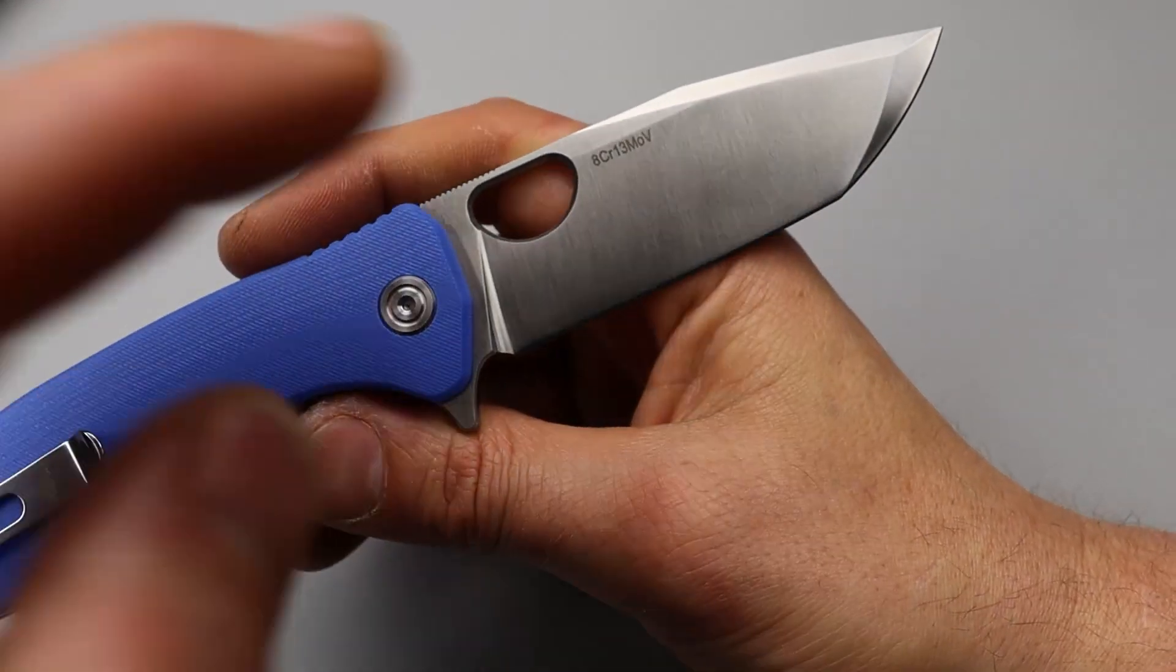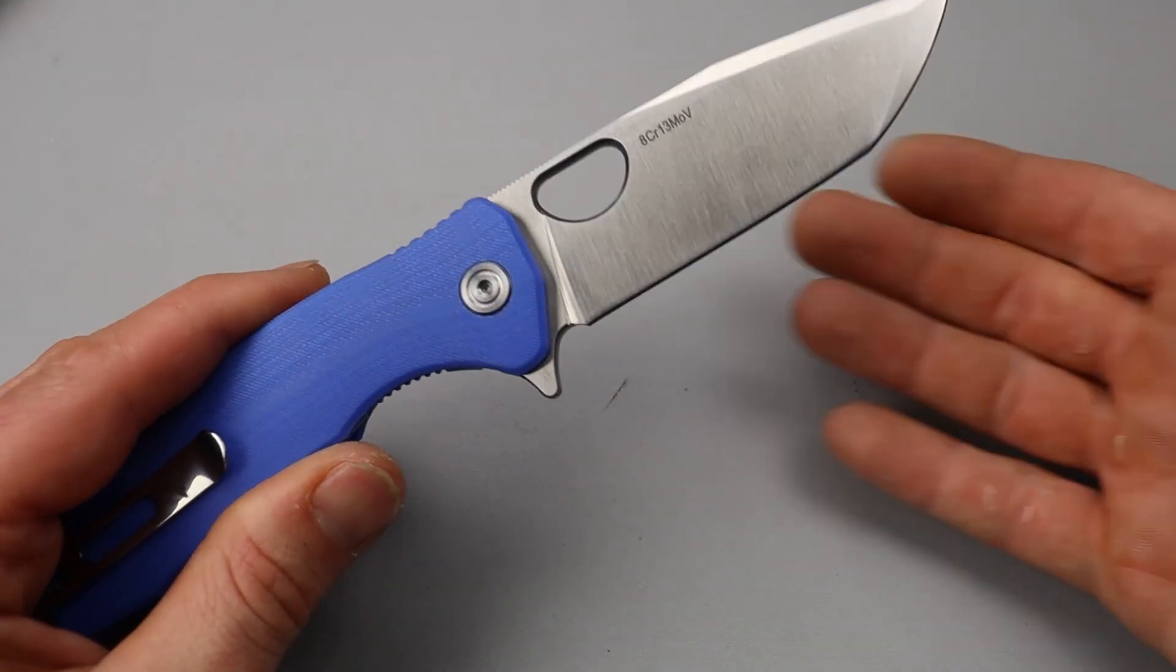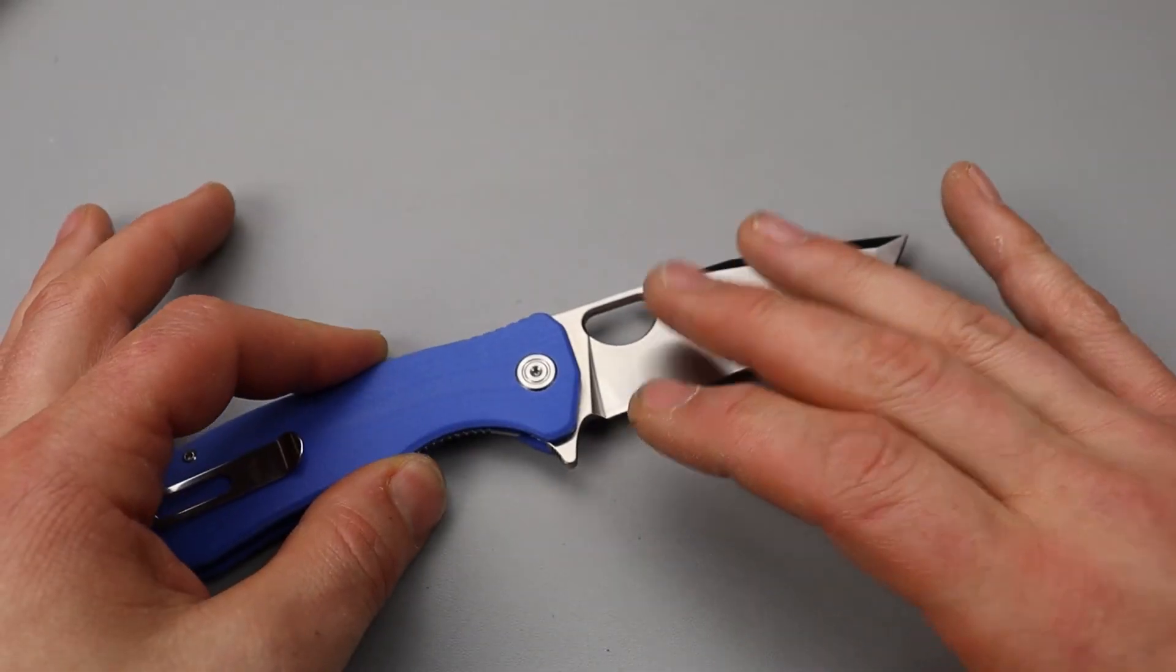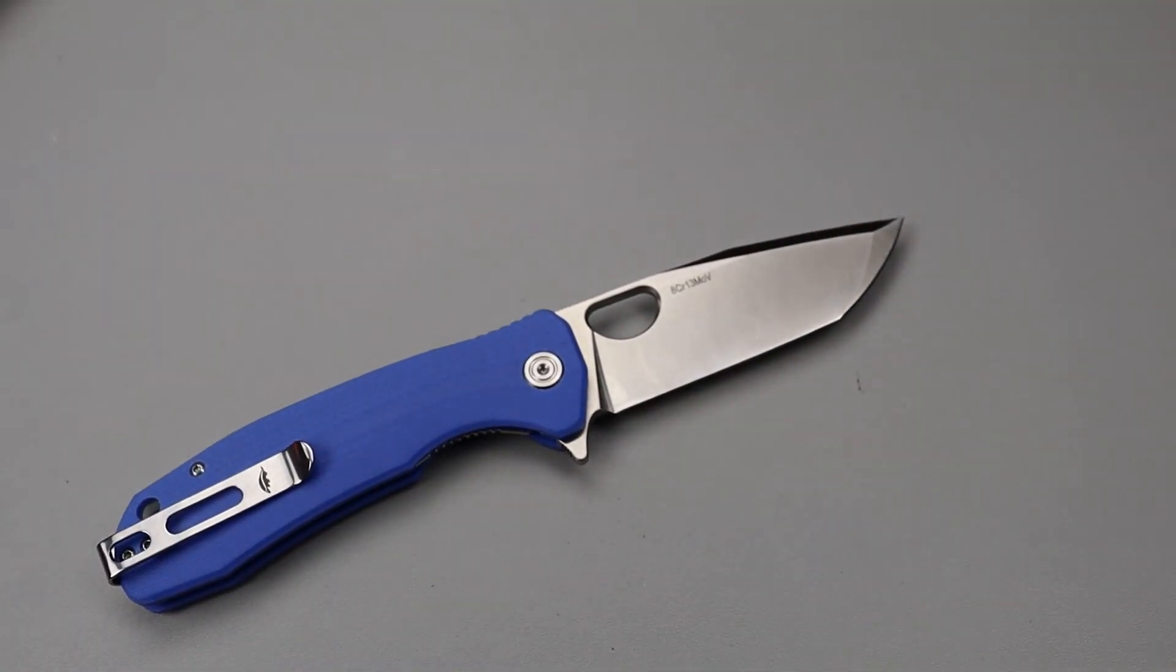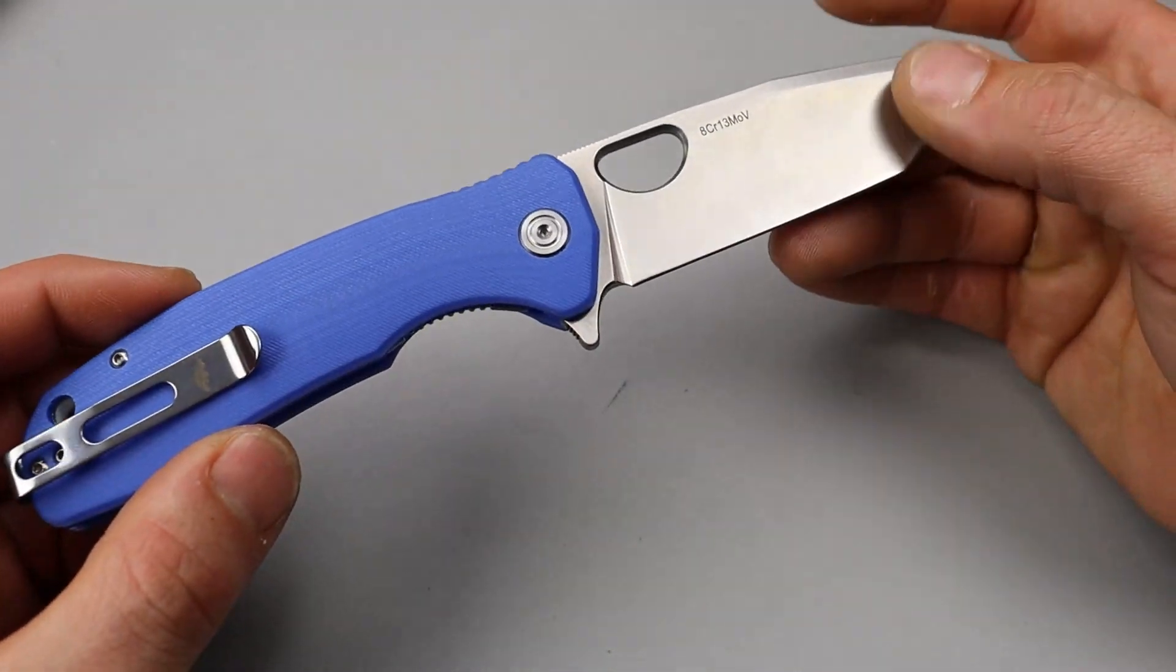Now, this one is an HCR, but they have them also in D2. So, you don't have to go with the HCR one. These ones are going to be a little bit more affordable because it is more of a budget steel. But, if you do want a bit more edge retention, you can go with the D2 version.